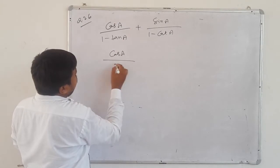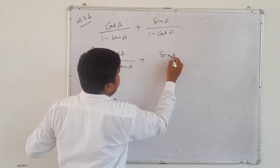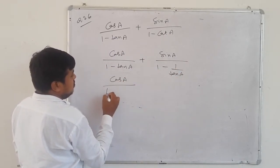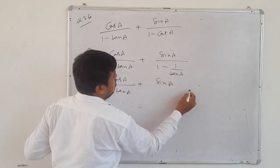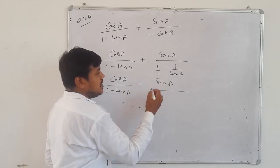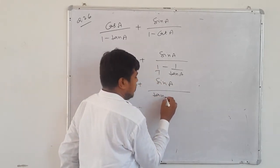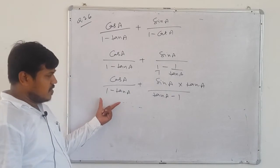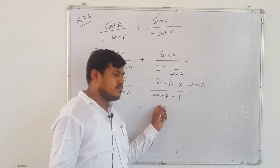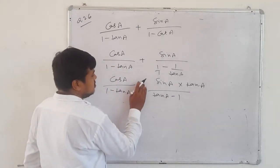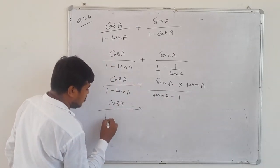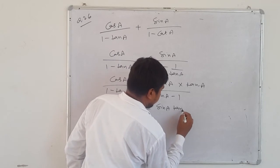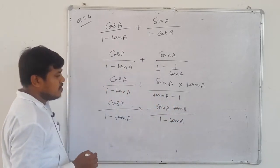Let me work it out: keep (1 - tan A) as is. For sin A/(1 - cot A): change cot A = 1/tan A, so denominator becomes (1 - 1/tan A). Multiply: LCM gives tan A in denominator. After simplifying: cos A/(1 - tan A) + sin A·tan A/(tan A - 1). Factor out minus: cos A/(1 - tan A) - sin A·tan A/(1 - tan A).